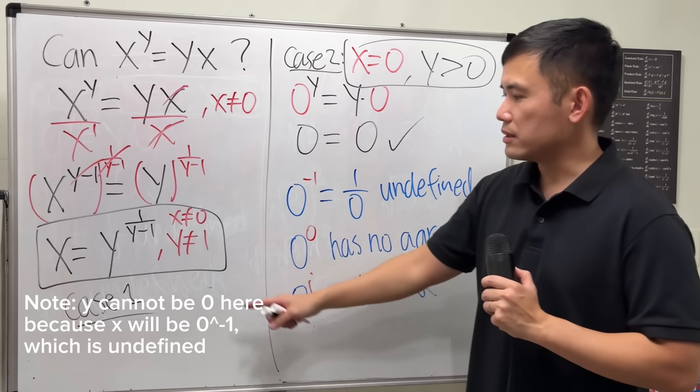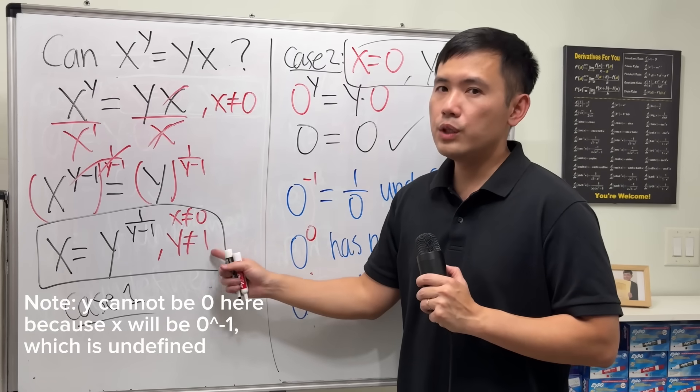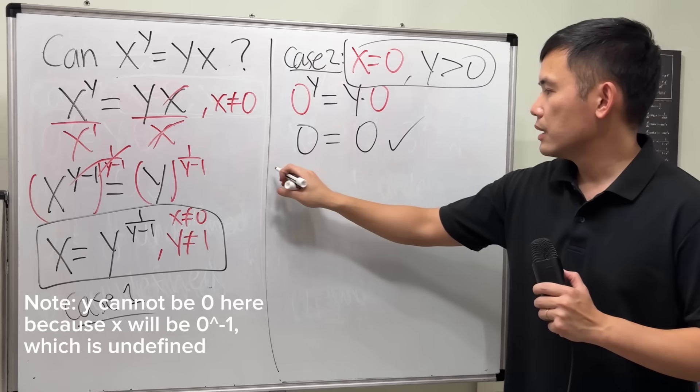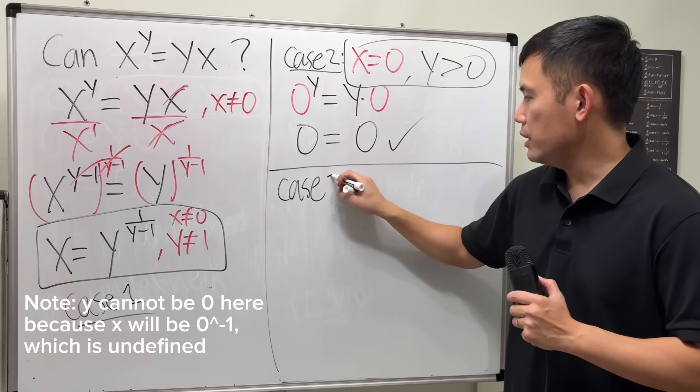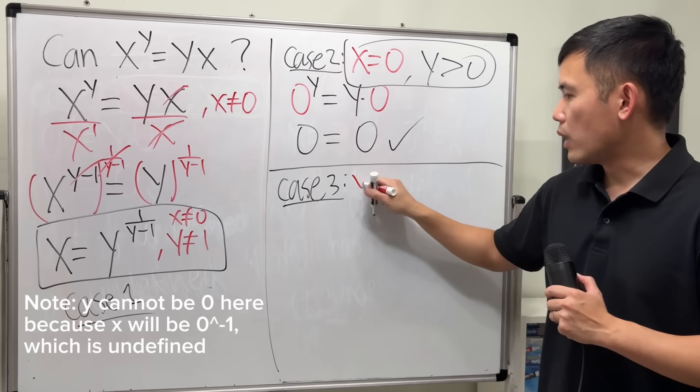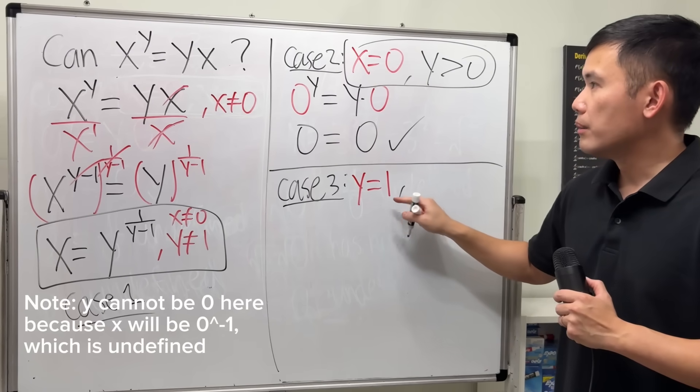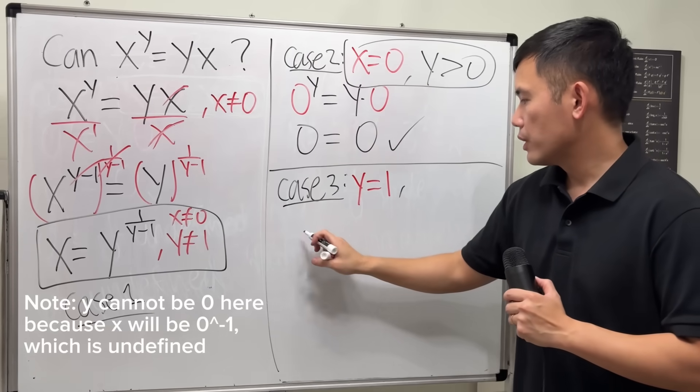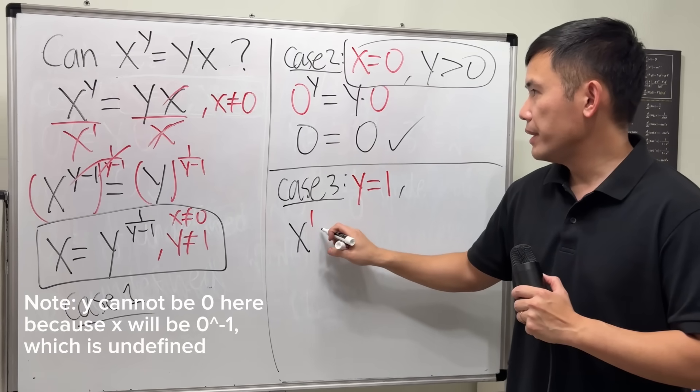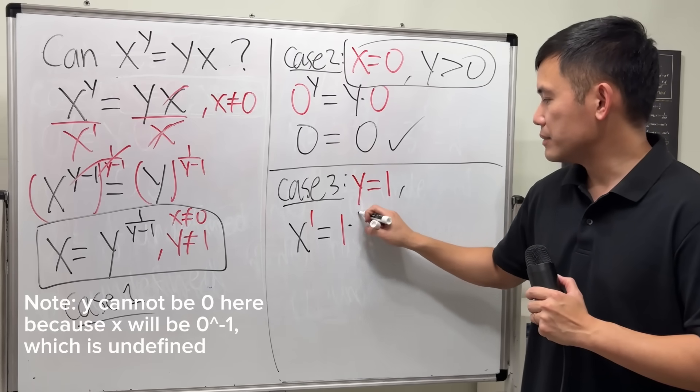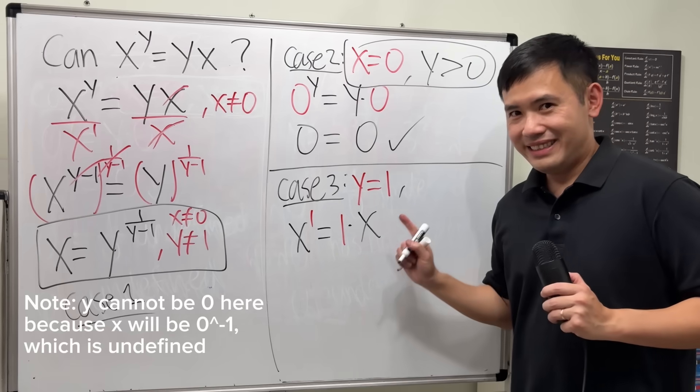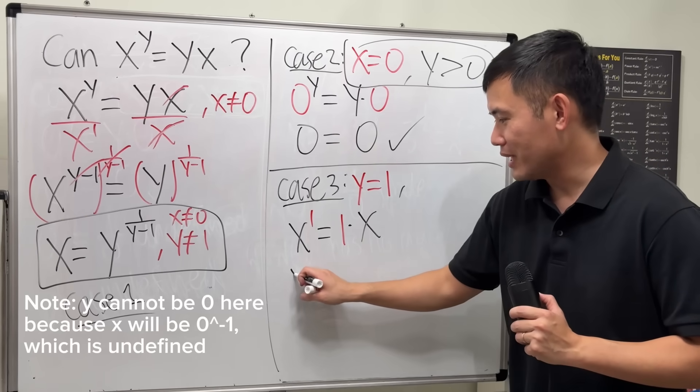Now, we also have to consider what if y is equal to 1. So, that's my case 3. We start off with y being equal to 1. Plugging into here and here, we get x to the first being equal to 1 times x.